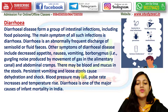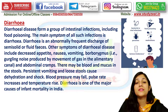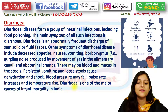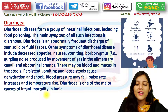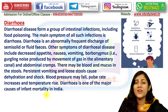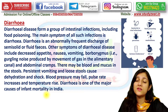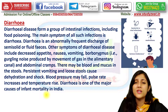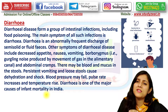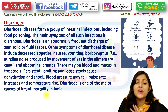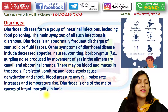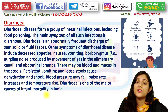Persistent vomiting and loose stools cause dehydration and shock. Blood pressure may fall, pulse rate may increase, and temperature also rises. Diarrhea is one of the major causes of infant mortality in India. It is a very unwanted disease — everyone who suffers from it wants to get rid of it as quickly as possible, as it prevents focusing on any work.